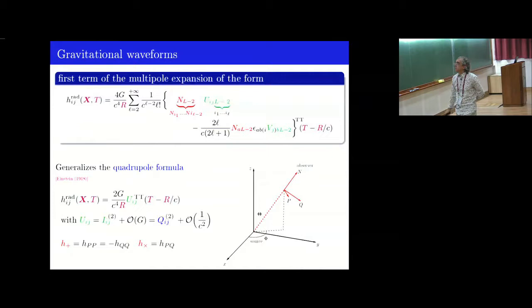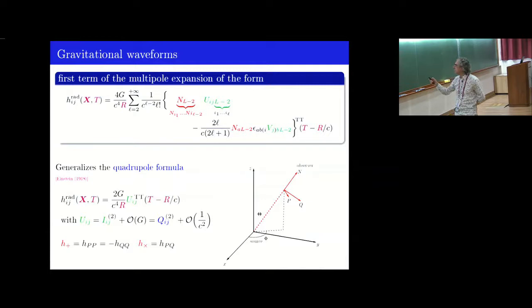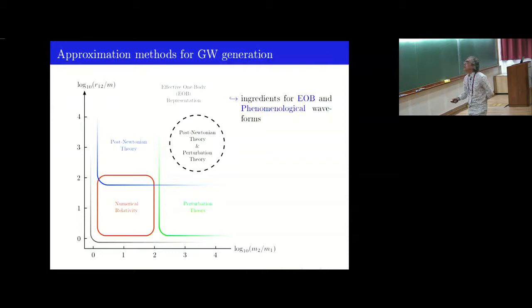At leading order, because of the factor 1 over C L minus 2 here, you recover a more familiar formula. Notice the T-t projector here and here, and noticing that Uij is actually the secondary derivative of the quadrupole. This is indeed the Einstein quadrupole formula. I would like to remind you this is just a representation equivalent to the one in terms of H plus and H cross polarization. And we want to compute U L and V L as a function of the source. This is the problem, and to tackle the problem, we have several approximations we can use.